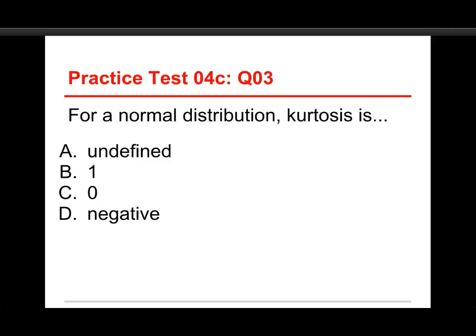Question number three. For a normal distribution, kurtosis is A, undefined, B, 1, C, 0, or D, negative? Well, the answer is zero.